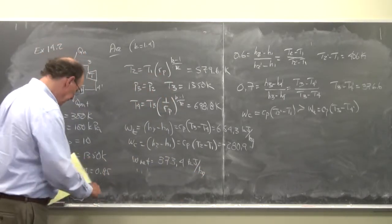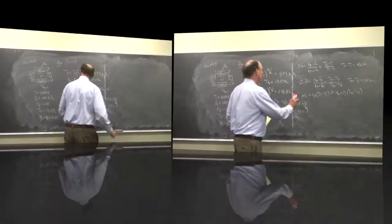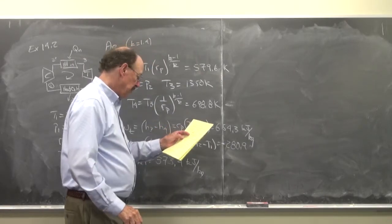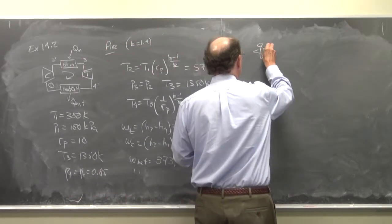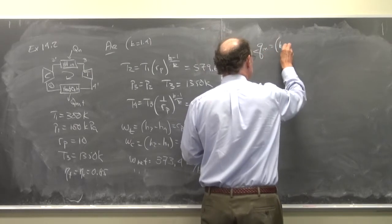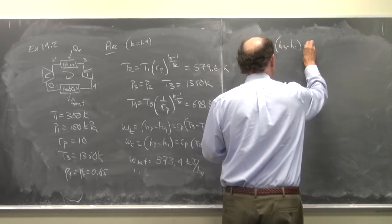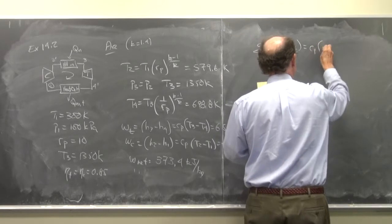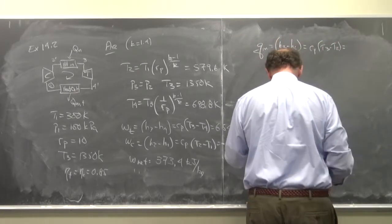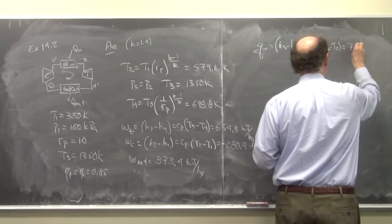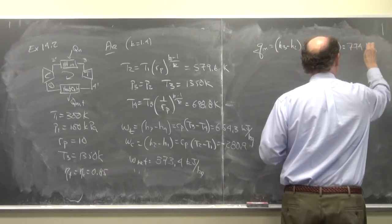And we can find the heat in, so the heat in from 2 to 3: h3 minus h2, c sub p times T3 minus T2, is equal to 775.4 kilojoules per kilogram.